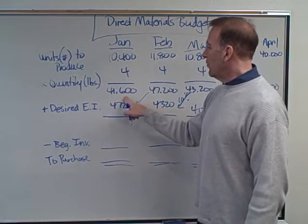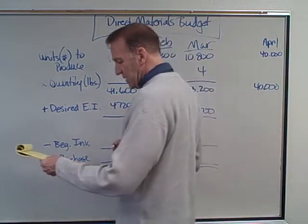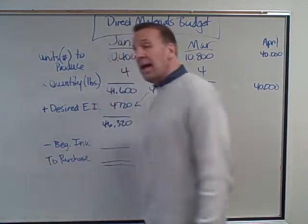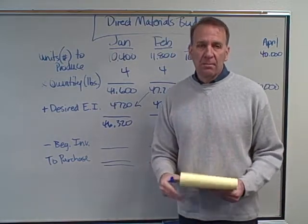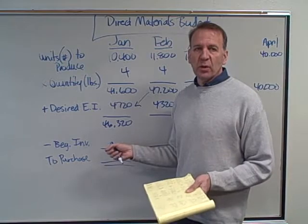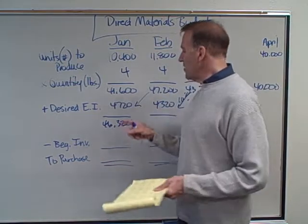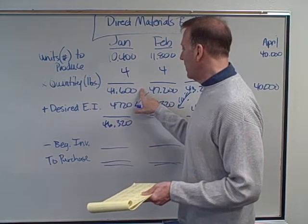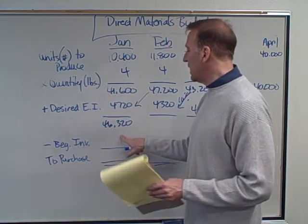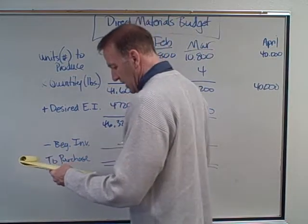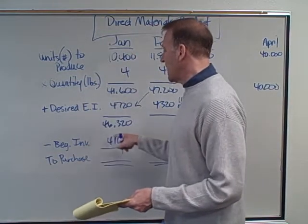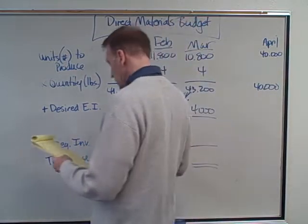For January: 41,600 pounds plus desired ending inventory of 4,720 gives total needs of 46,320 pounds. Now we subtract beginning inventory. The problem may tell you what beginning inventory is, or you take 10% of January's production needs — which would be December's ending inventory — so 10% of 41,600 is 4,160. That's our beginning inventory.